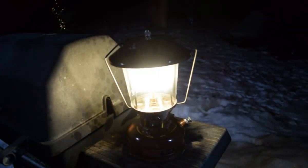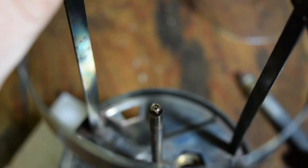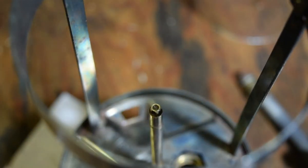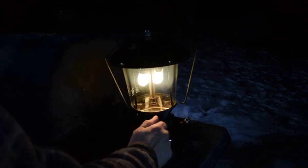This would give you either a lantern that wouldn't light or one that wouldn't turn off. This matches the most common complaints about the 275. They fireball while lighting because the valve leaks when you're pumping it up, and then they won't shut down because of the valve leak.